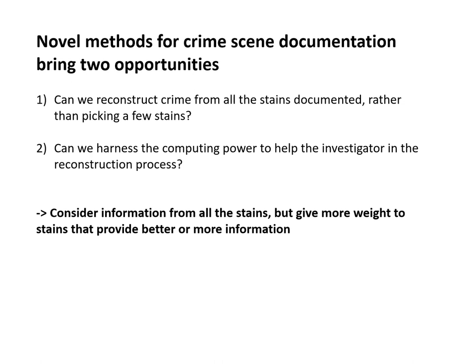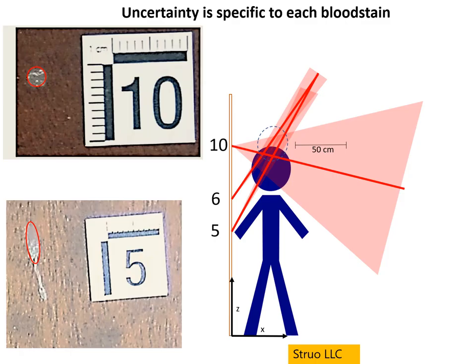My hypothesis and desire is that we can consider information from all the stains. But we know, from Zach's presentation this morning, that not all stains are equal. Some provide a lot of information if they are on a nice, painted, smooth wall or cardstock, while others, if they land in sand, give you very little information. The idea is to give each stain the weight it deserves in the final determination of, for example, the region of origin of the blood pattern.